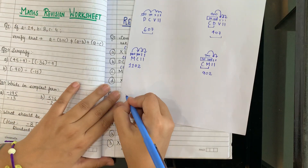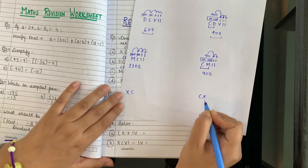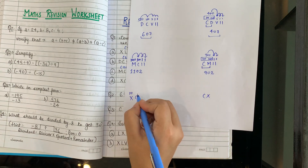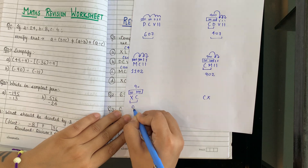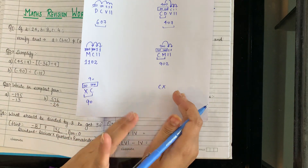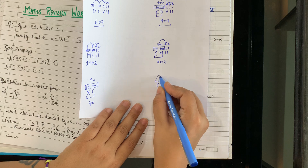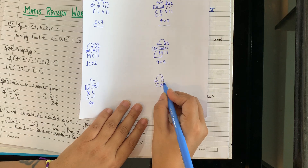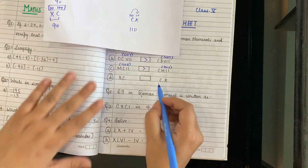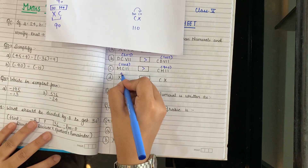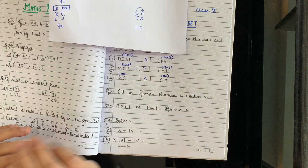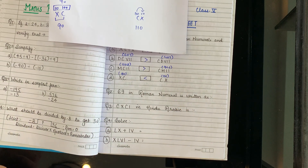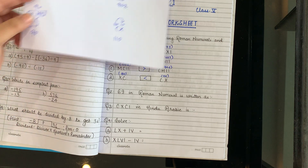Next: XC and CX. X is 10, C is 100 — chote ke baad bada — minus karo: 100-10 = 90. CX: C is 100, X is 10 — bade ke baad chota — add karo: 100+10 = 110. So 90 vs 110 — CX is greater. Always remember: bade ke baad chota aana chahiye — jahan chote ke baad bada aaye, minus karo.